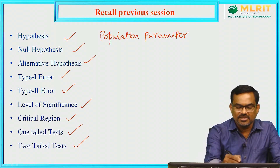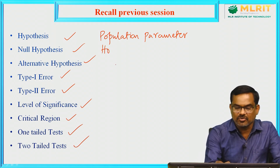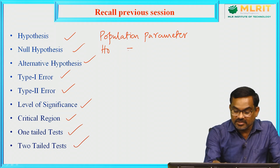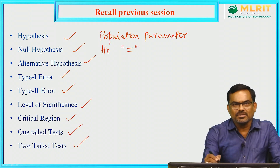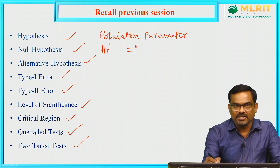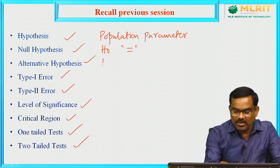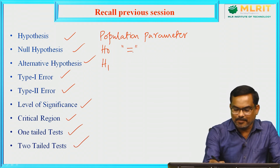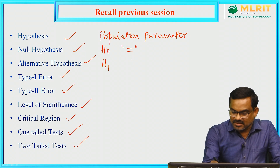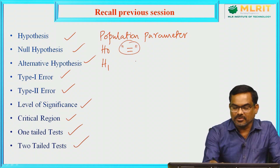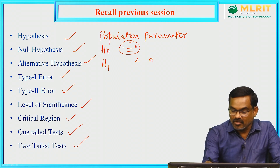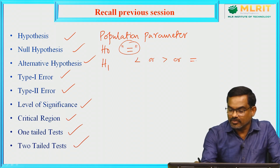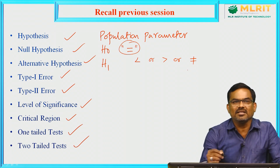There are two types of hypothesis. Null hypothesis, denoted by H naught, is always in the form of 'equal to' — the actual statement which is to be tested. Alternative hypothesis, denoted by H1, is other than the null hypothesis. Since null hypothesis uses 'equal to,' the alternative hypothesis can be less than, greater than, or not equal to type.